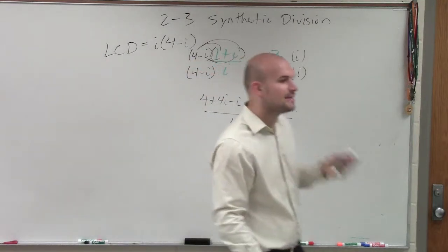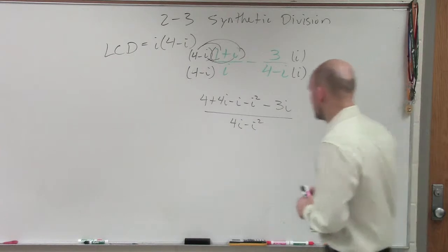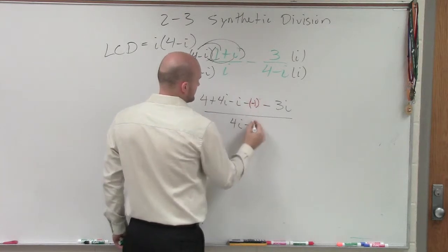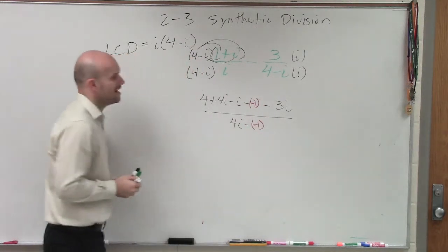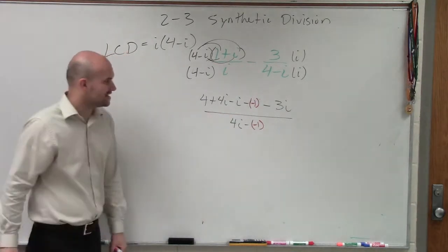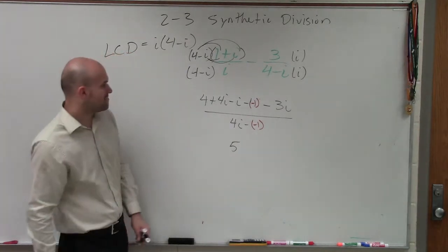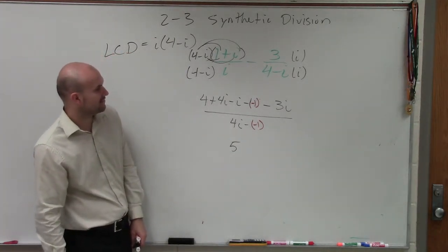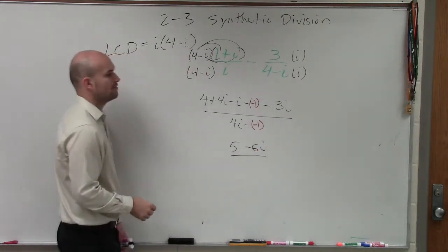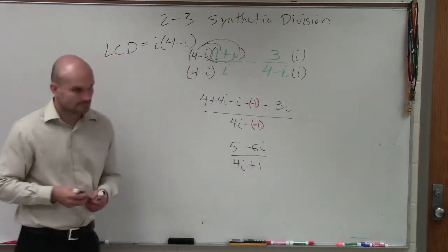But remember, ladies and gentlemen, when we're doing our complex numbers, our i squared converts to a negative one. So, let's go and rewrite all of our i squareds as negative ones. Now, let's simplify our expression. So, now we have negative minus a negative one, which is now a positive one, plus four is five. Four i minus i is negative three i. Negative three i minus three i is a negative six i. All over four minus a negative one, which is four i plus one.